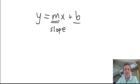And this at the end — the b, the number at the end — that's the y-intercept.